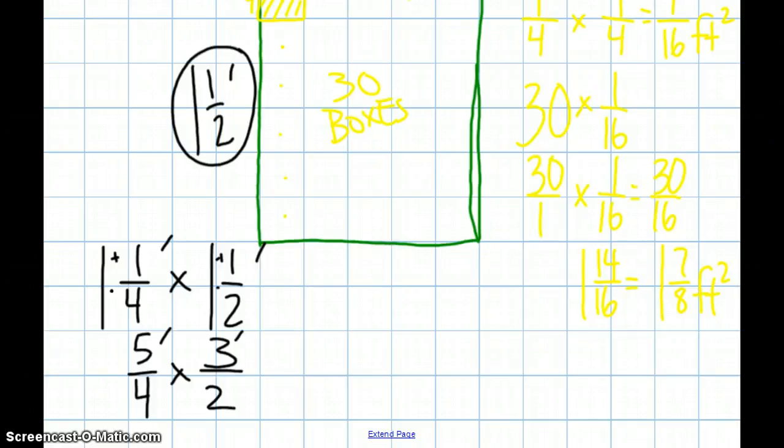And then I am going to multiply those, and I get 15 eighths. And, 8 goes into 15 one time, with 7 left over, and I get 1 and 7 eighths square feet.